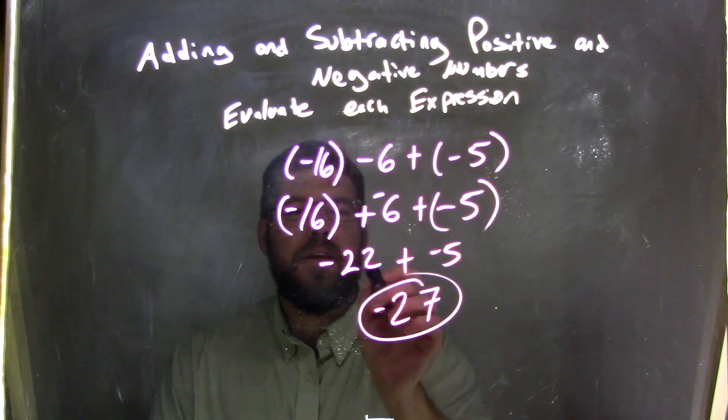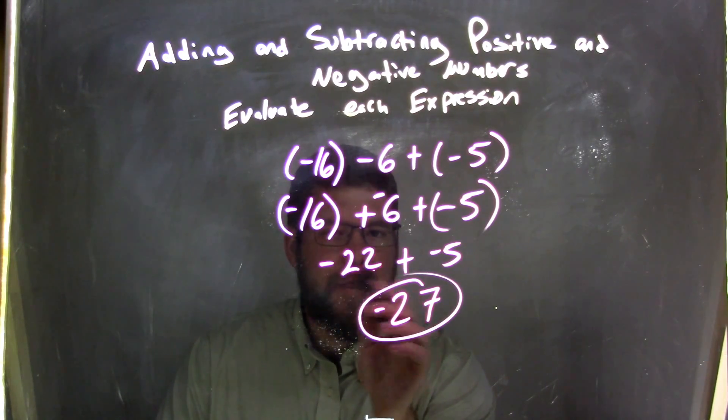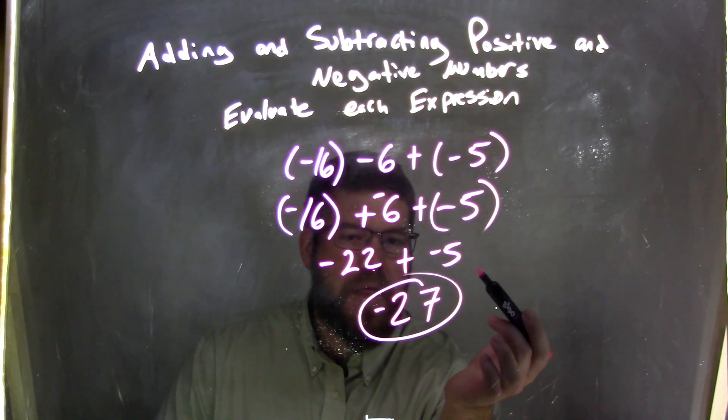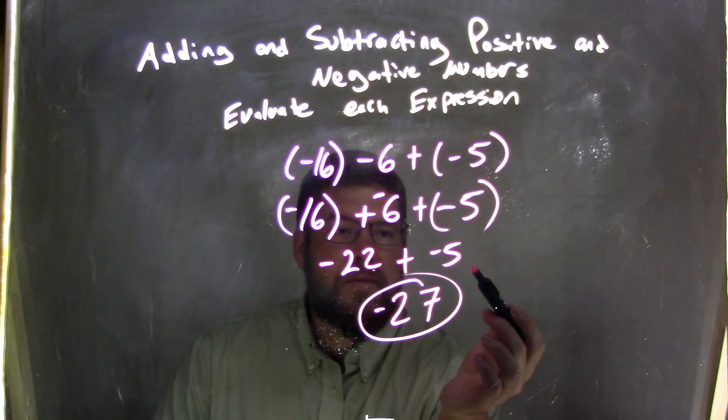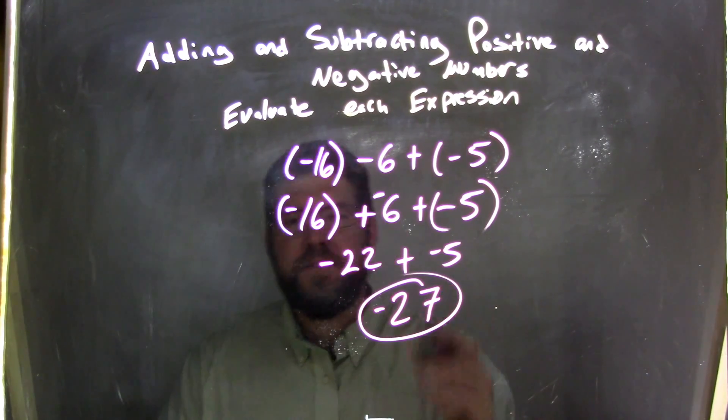Negative 16 plus negative 6 is negative 22. That's a more negative direction. We bring in the negative 5. Negative 22 plus negative 5 is negative 27, which is our final answer.